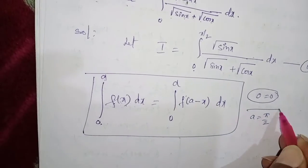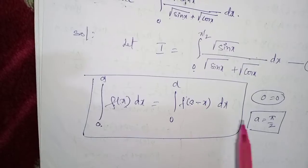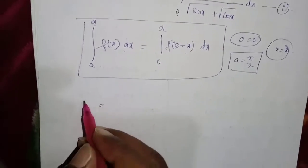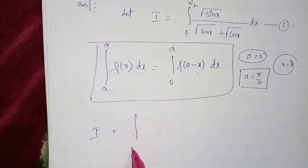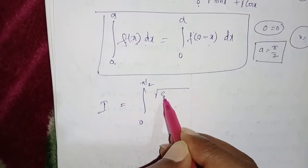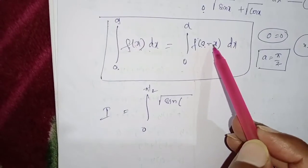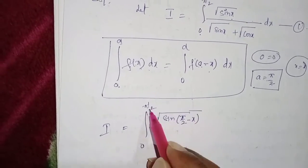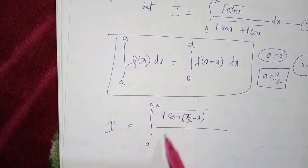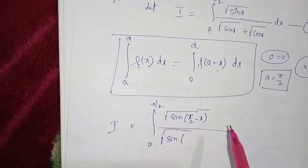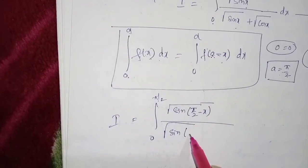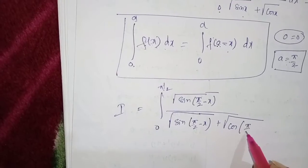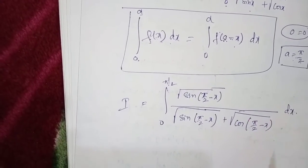In f(x), we replace x with (a − x), where a = π/2. So x becomes (π/2 − x). Substituting the formula, I = ∫₀^(π/2) √sin(π/2 − x) / [√sin(π/2 − x) + √cos(π/2 − x)] dx.